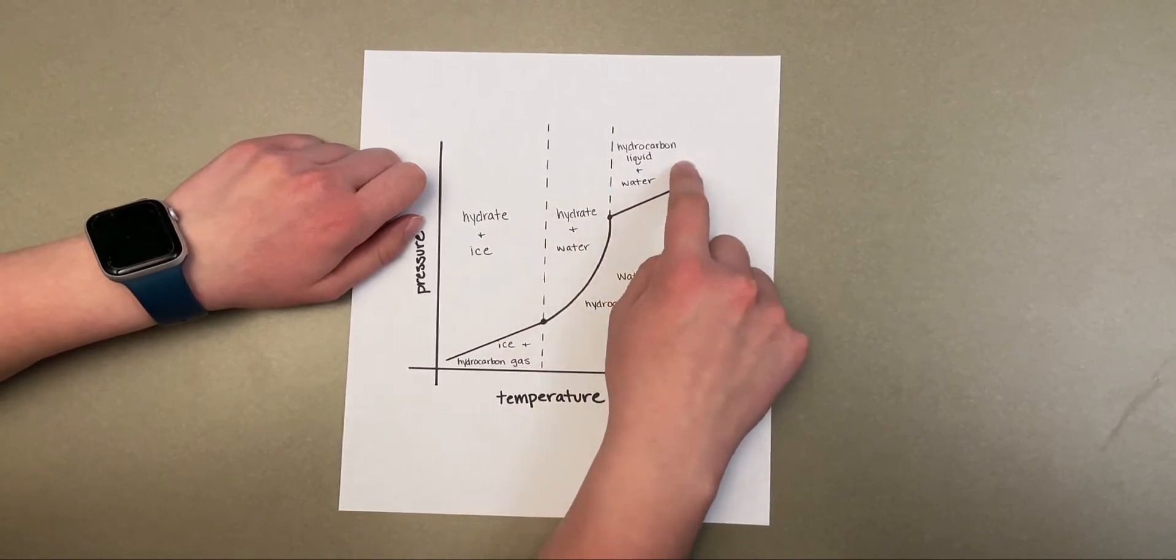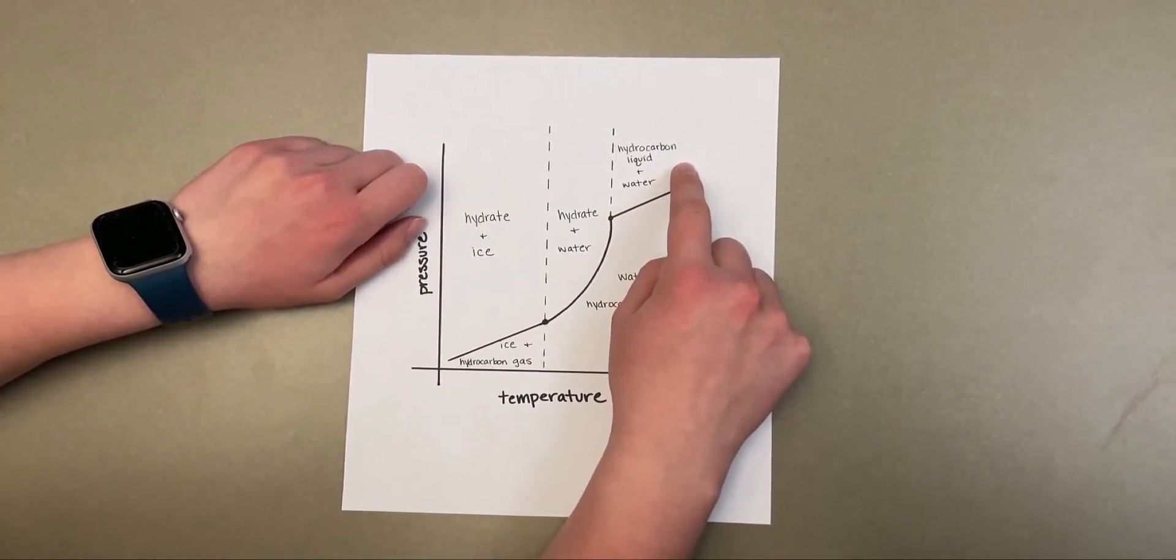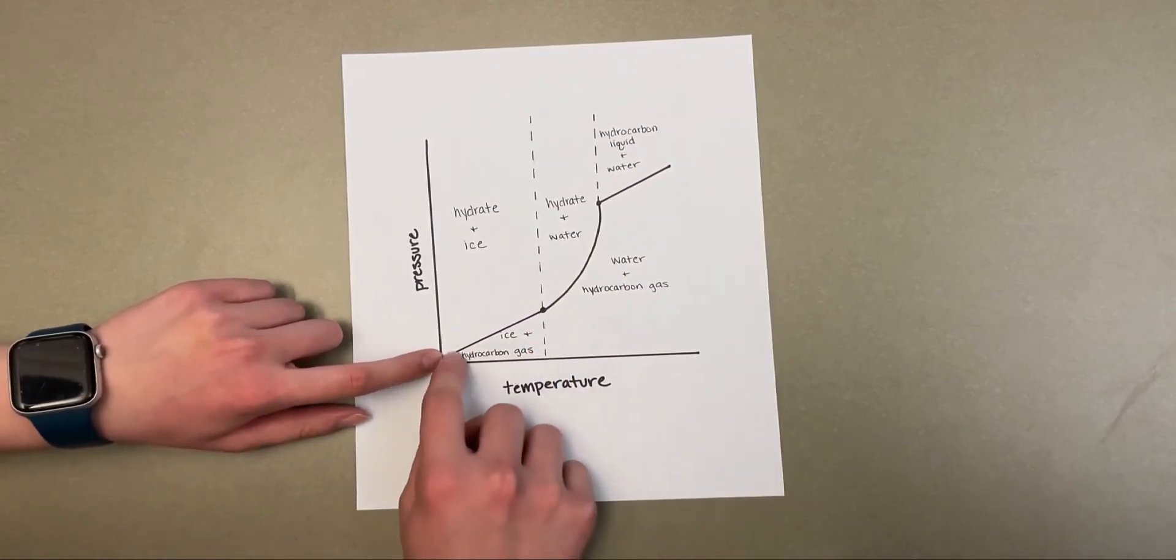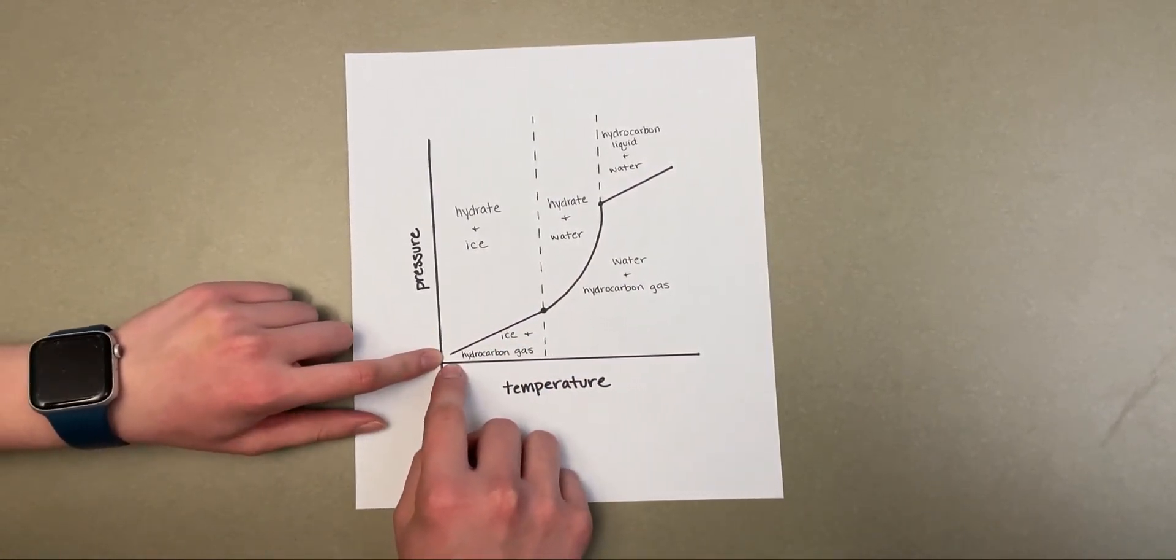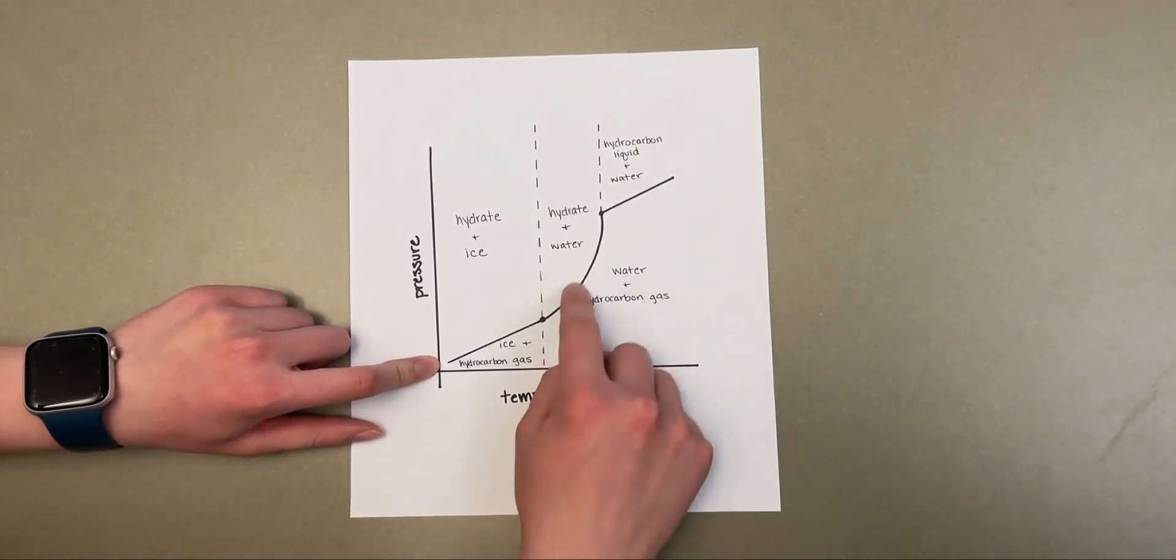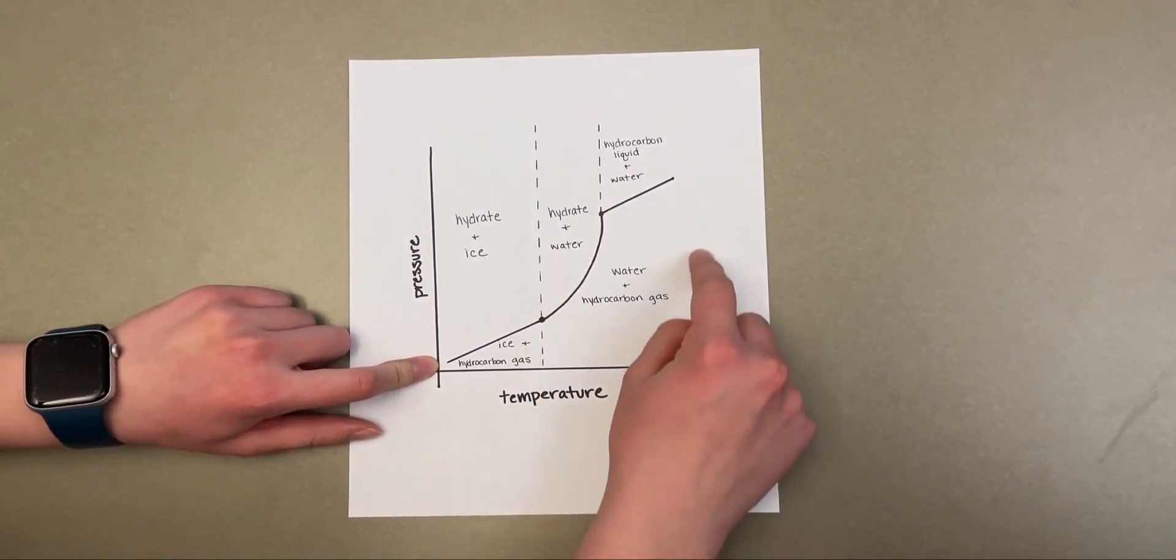If we decrease our pressure and our temperature, ice and hydrocarbon gas can form. And if we increase our temperature and remain underneath our specific gravity gas line, water and hydrocarbon gas are able to form.